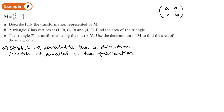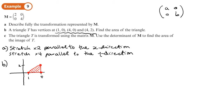Part B: a triangle has vertices (1,0), (4,0), and (4,2). Find the area of the triangle. Plotting those points: the base is 3 and the height is 2. So the area is half times 3 times 2, which gives an area of 3 square units.